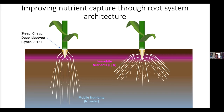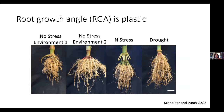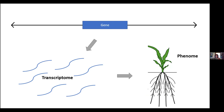Since root growth angle is such a dominant component of these idiotypes, I became really interested in understanding how root growth angle is controlled under environmental stress, particularly in the context of nitrogen stress. Work from Jonathan's lab also found that root growth angle is plastic. These are representative examples of the same genotype grown in non-stressed environments and then under nitrogen stress and drought stress. Under stressed environments, the root growth angle became steeper — a response we've seen in many different maize lines, though the degree of responsiveness varies by genotype.